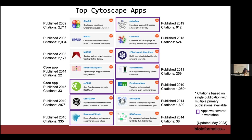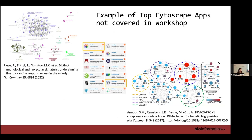I've also highlighted CyREST, which is an app that allows you to communicate with Cytoscape from anywhere — I use it from R all the time. A lot of the manual aspects of Cytoscape can get repetitive, so if you're an R user I highly recommend learning CyREST because you can talk directly with Cytoscape in a given pipeline and generate a lot of the work automatically, then eventually go back and sit down with Cytoscape to finalize figures.